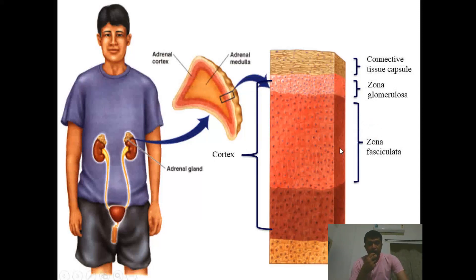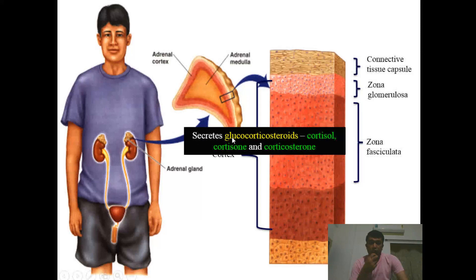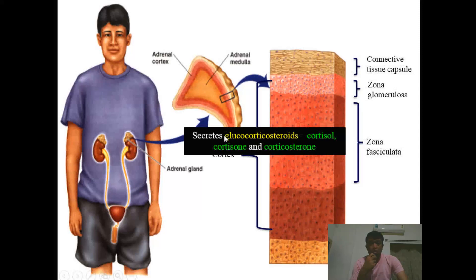The second layer is zona fasciculata, which synthesizes an important group of hormones called glucocorticoid steroids. They are called corticoids because they are from the cortex, and glucocorticoids because they are majorly involved in glucose metabolism or carbohydrate metabolism. There are three major glucocorticoids: cortisol, cortisone, and corticosterone. They are similar in name with different chemical substitutions, and their functions are essentially the same.